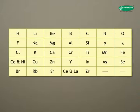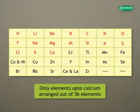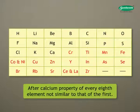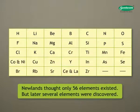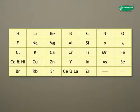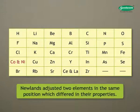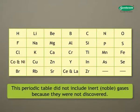Newlands could arrange elements only up to calcium out of the total 56 elements known. After calcium, every eighth element did not possess properties similar to that of the first. Newlands thought only 56 elements existed, but later several elements were discovered. In order to fit the existing elements, Newlands adjusted two elements in the same position which differed in their properties. This periodic table did not include inert or noble gases because they were not discovered.